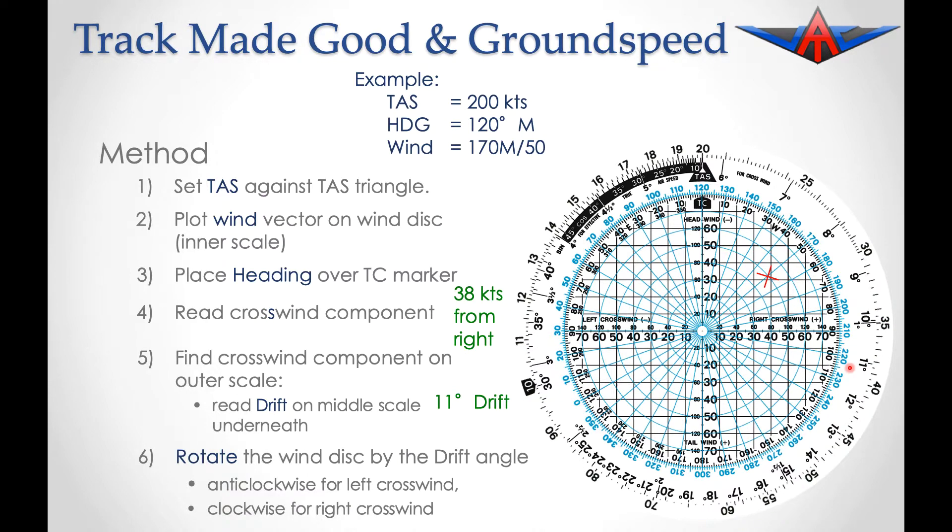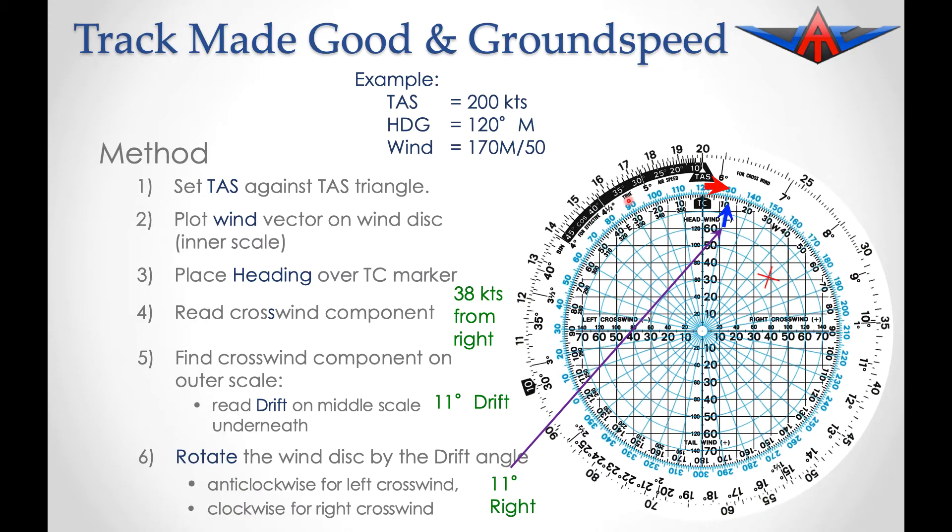Now we've calculated 11 degrees of drift. We need to shift this because this is not the actual direction the aircraft has traveled. We had a right crosswind of 11 degrees, so we need to rotate the wheel around to the right. If it's a left crosswind, we would rotate towards the left. We're going to rotate it to the right by 11 degrees, which equates to the drift we've established.